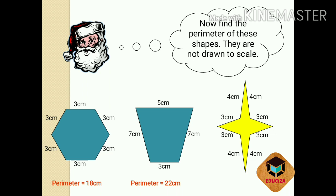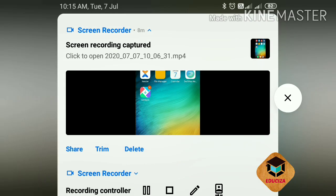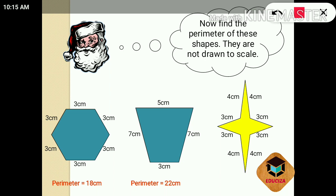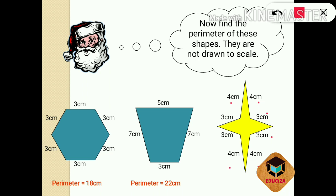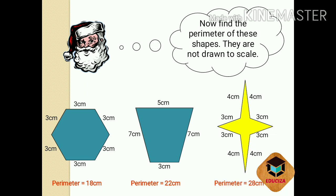Third shape — it is a star shape. How to find out the perimeter of this shape? Simple: you have to add all the sides. So starting: 4 plus 4 equals 8, plus 3 equals 11, plus 3 equals 14, plus 4 equals 18, plus 4 equals 22, plus 3 equals 25, plus 3 equals 28 centimeter. So the perimeter of this star is 28 centimeter.